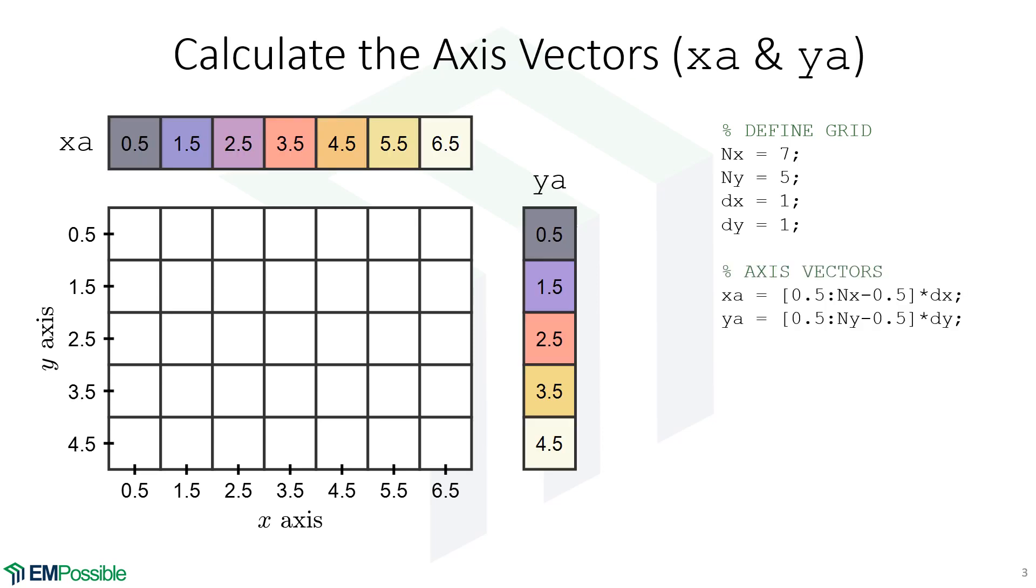The next thing we want to do is create what I call axis vectors - that's my word, not necessarily an industry standard thing - but they're just arrays that contain the center position of each cell in the grid. We had in mind these positions for cells along the x-axis, so I create an array that actually contains those numbers.